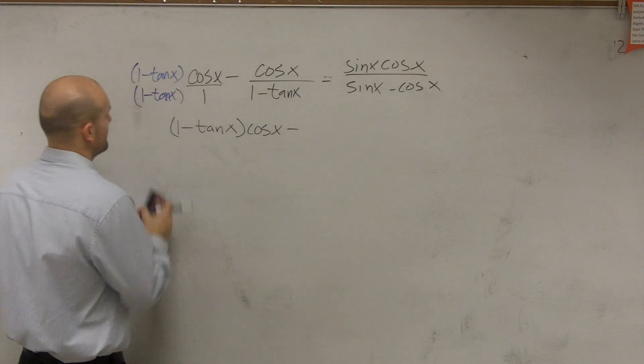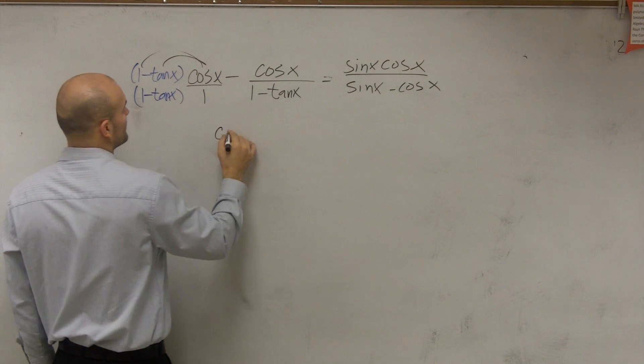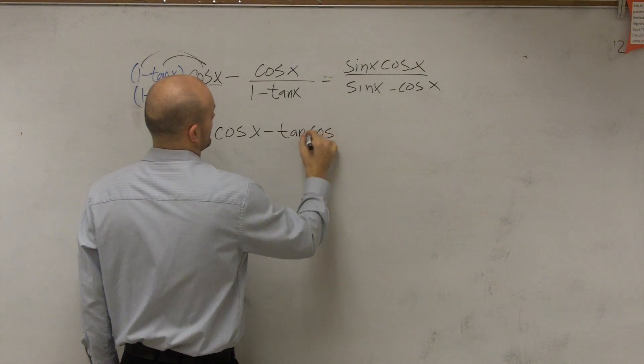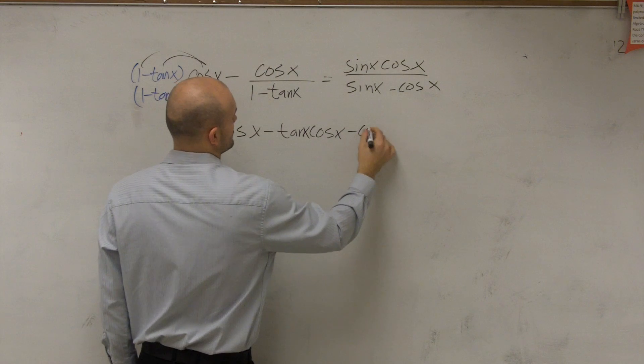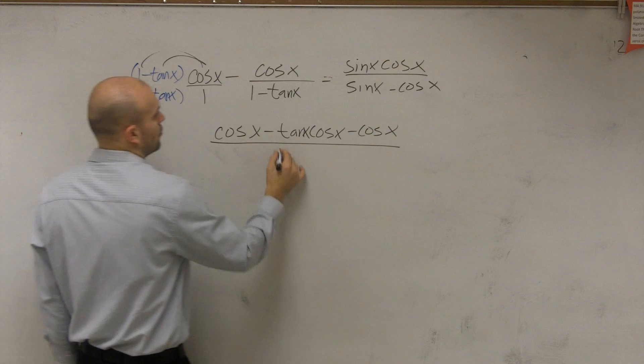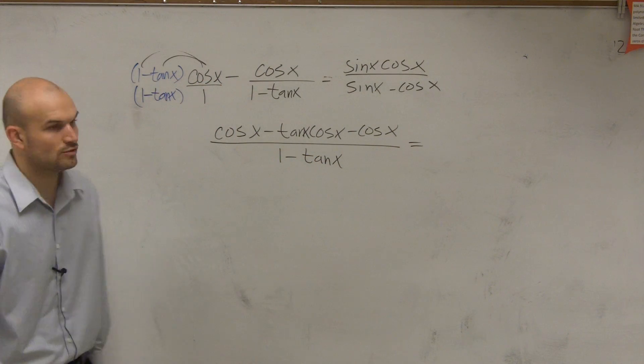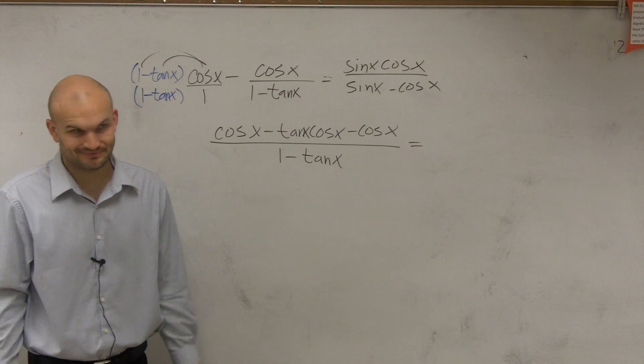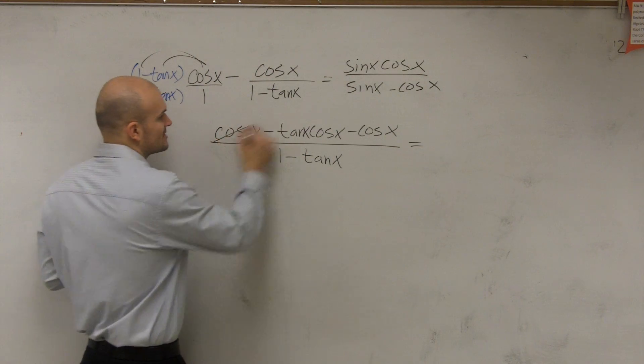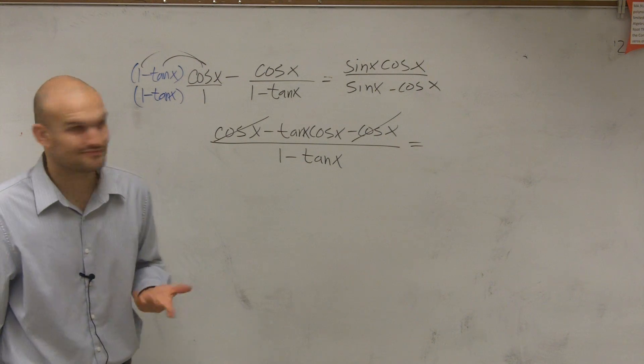So if I have the distributive property, I'll have cosine of x minus tangent of x cosine of x minus cosine of x all divided by 1 minus tangent of x. And we want that to equal sine of x minus cosine of x. Well, the important thing is we notice that cosine of x minus cosine of x just goes down to 0. So that's kind of nice.